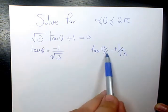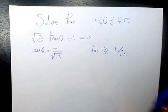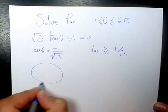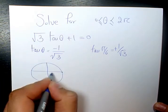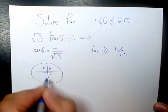And we need to somehow relate this to θ using the CAST rule: C-A-S-T. We know tan is negative in quadrant 2 and also in quadrant 4.